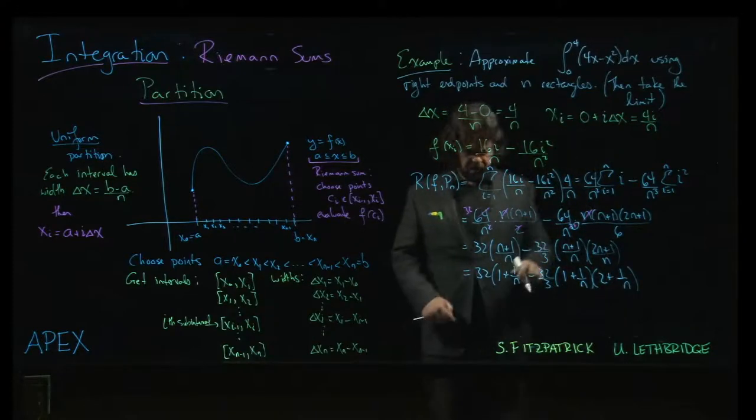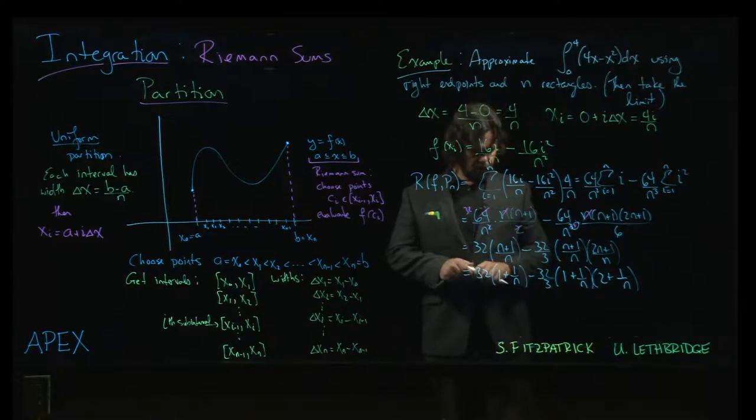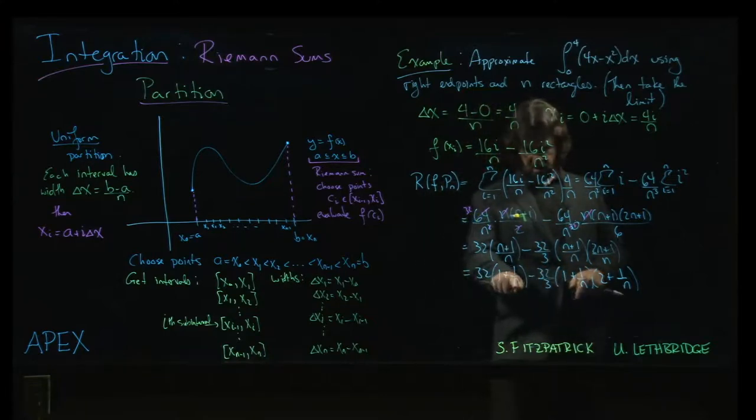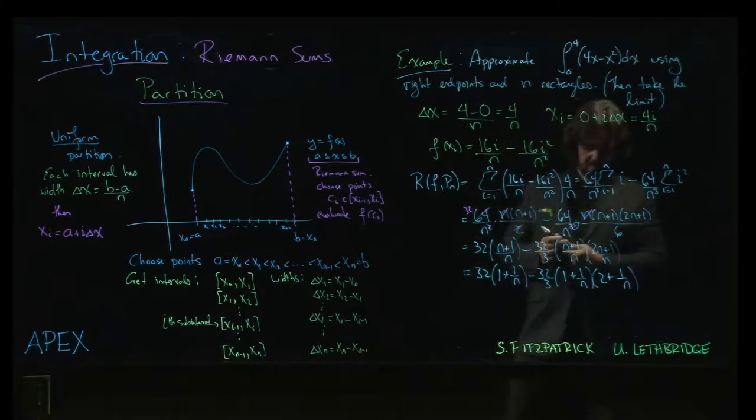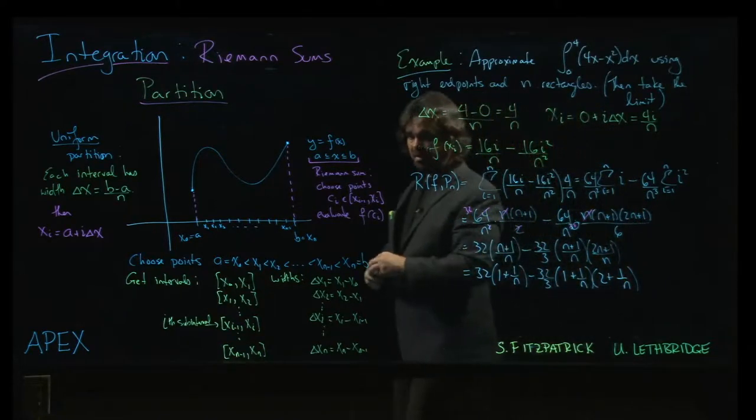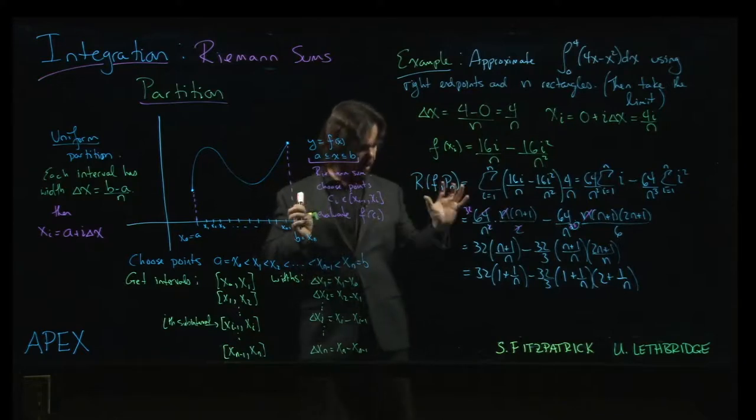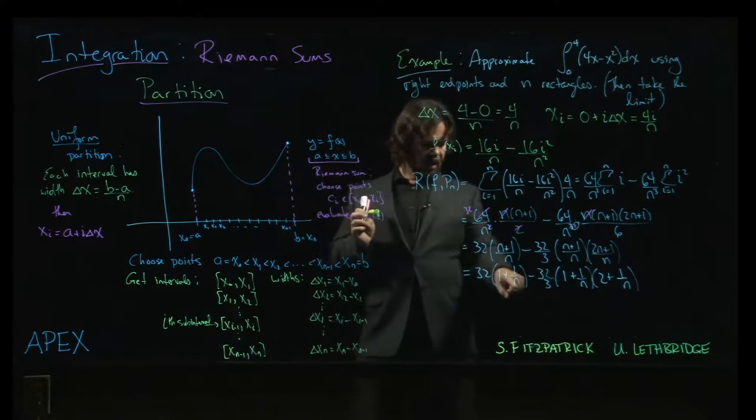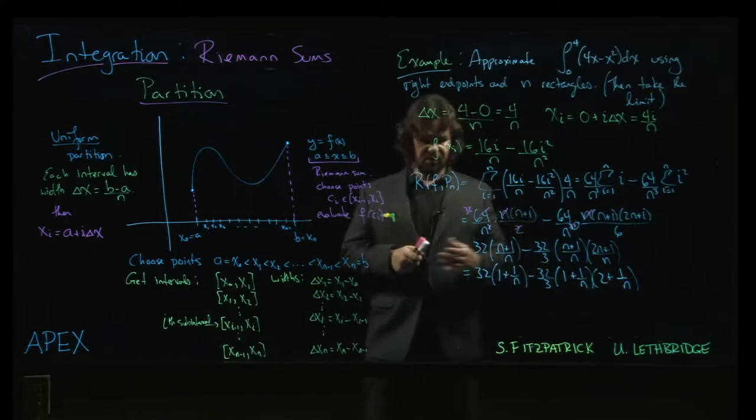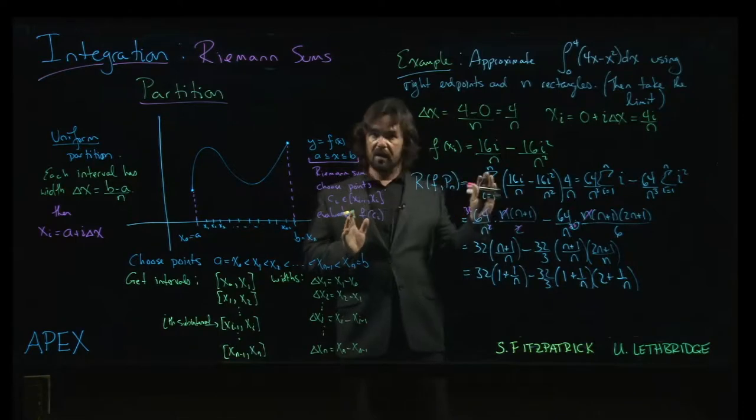Now I could multiply this out and simplify if I wanted to, but what I want to do is point out, actually there's a cool thing when you write it like this. You know, we know what's going to happen to 1 over n. If n is going to infinity, 1 over n, the bigger n gets, the smaller 1 over n gets. So this 1 over n is kind of an error term. It's telling you how this sum depends on n.